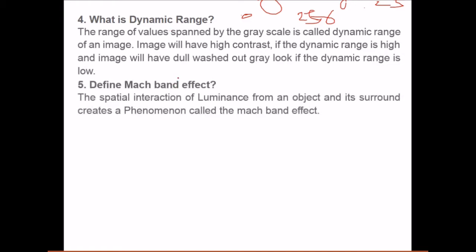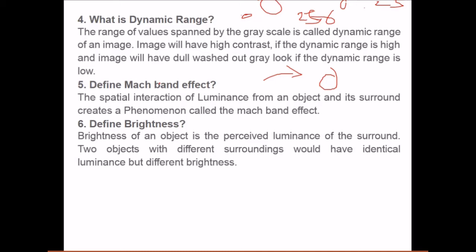What is mag band effect? The special interaction of luminance from an object. So this is an object, this is an interaction of luminance. Luminance is the light or the energy perceived by the observer. Now this luminance and its surroundings creates a phenomena which is called a mag band effect. What is brightness? Brightness of an object is the perceived luminance of the surround. Two objects with different surroundings would have identical luminance but different type of brightness. So brightness is the perceived luminance.